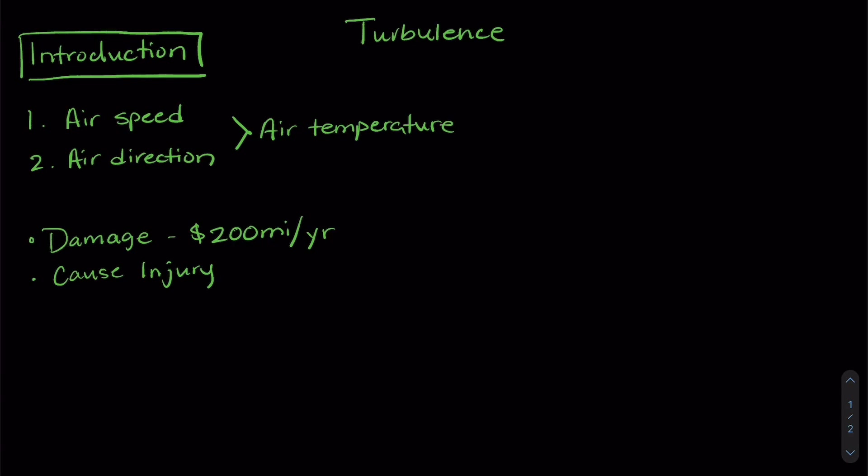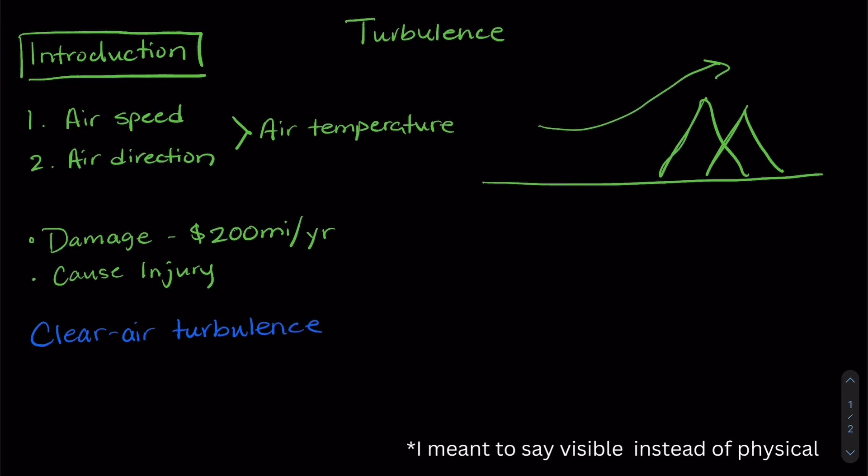A lot of times turbulence can happen when your plane maybe flies over a mountain range or if it has to go around a storm and that's because there's lots of movement in the air happening because of those physical features. But there is also a type of turbulence that you're probably not familiar with which is called clear air turbulence. And this is turbulence that happens when you don't have any kind of physical thing that is causing the turbulence. You're just in clear air.